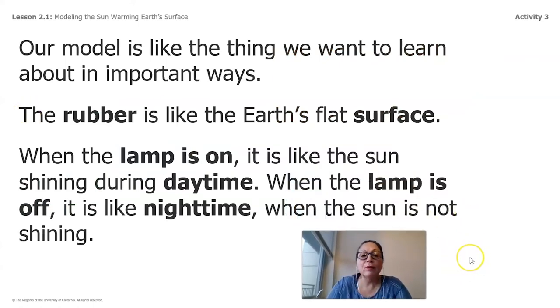So our model is like the thing we want to learn about in important ways. The rubber is like the earth's flat surface. When the lamp is on, it is like the sun shining during the daytime. When the lamp is off, it is like the nighttime when the sun is not shining. How amazing is that? Did you make the same predictions? I'm sure you did.